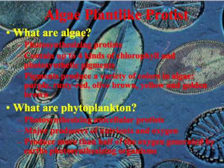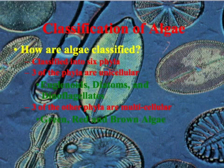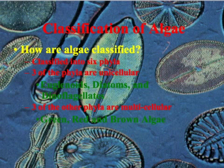Next, let's look more in depth at how algae are classified. They're classified into six different phyla — three of the phyla are unicellular and three are multicellular. The unicellular ones are euglenoids, diatoms, and dinoflagellates. These are single-celled organisms, and many of them also have methods of movement in addition to being able to photosynthesize. The three multicellular phyla are green, red, and brown algae — what we might think of as typical algae. The most well-known example is kelp, a brown algae found in the ocean.